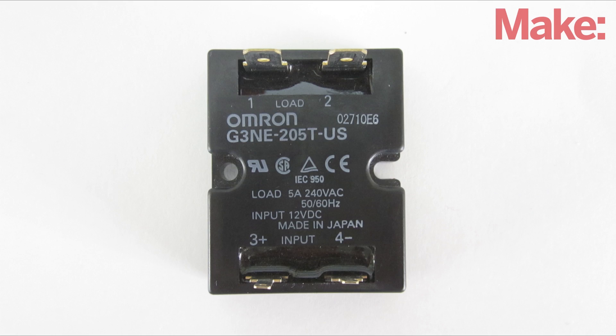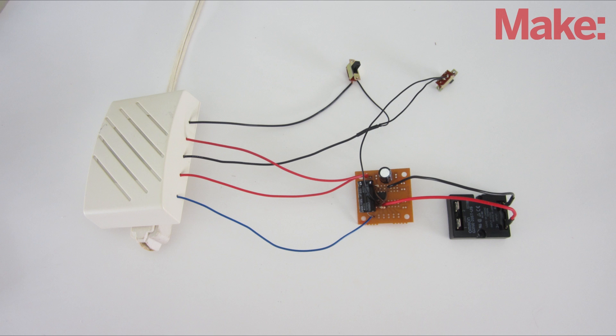To turn the light on and off, I'm using a solid state relay. This functions a lot like a regular relay, but it requires a lot less power to operate. The positive input of the relay is connected to the output of the control circuit. The negative input terminal is connected to ground.